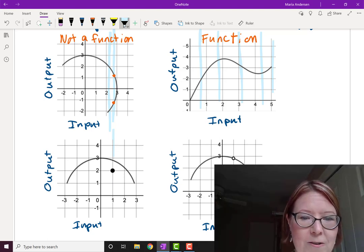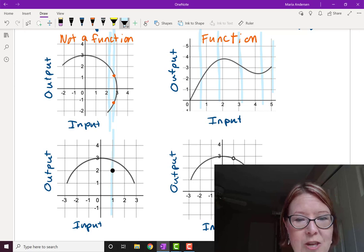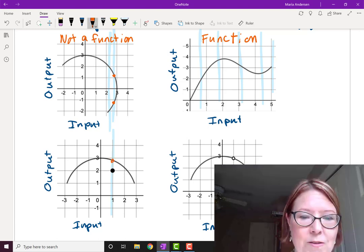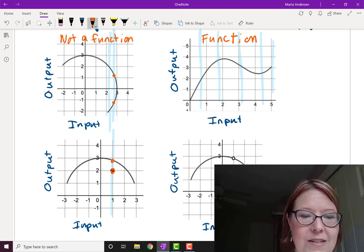If we draw a vertical line through the value at 1 it's going to hit the point 1, 2 and it's going to hit the semicircle. And so again because it hits more than one point this one is not a function.